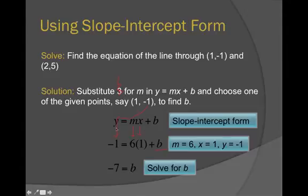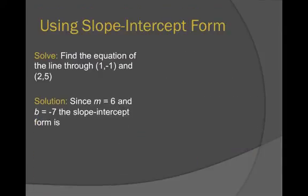So going back to slope-intercept form now, I know my m is 6, my b is negative 7, and that's how I'm going to write the equation of the line: y equals 6x minus 7.